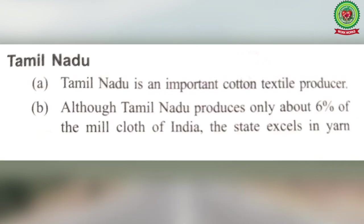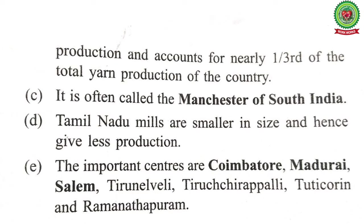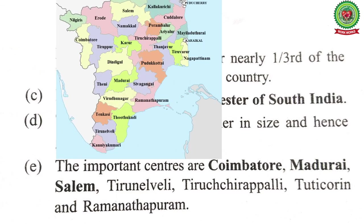Tamil Nadu is an important cotton textile producer. Although Tamil Nadu produces only 6% of the mill cloth of India, the state excels in yarn production and accounts for nearly one-third of the total yarn production of the country. It is often called the Manchester of South India. Tamil Nadu mills are smaller in size and hence give less production. The important centers are Coimbatore, Madurai, Salem, Tirunelveli, Tiruchirapalli, Chidambaram, and Ramanathapuram.